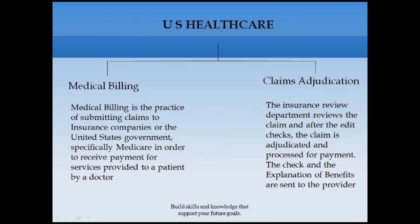In US healthcare there are two different types of processes. One is medical billing, which is the practice of submitting a claim to the insurance company — either private or government, specifically Medicare — in order to receive payment for services provided to the patient. The other is claim adjudication, where the insurance company verifies all the details in the claim, like CPT codes, diagnosis codes, and medical records, and based on that they release the payment.